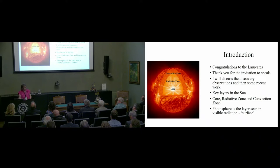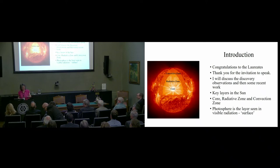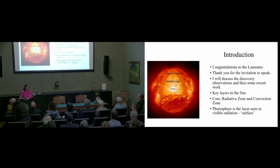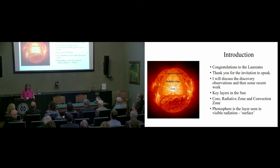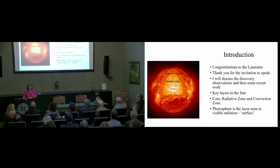We have the core where the nuclear reactions happen. Beyond that, what I always thought of as a nice quiet zone. And then for the Sun, the outer 30% or so by radius is the convection zone, where convection is the dominant transport mechanism for heat — a very efficient process. You get turbulence on very many scales, and turbulence is absolutely fundamental to what we're able to see.